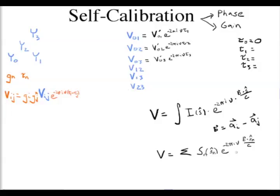In principle you can solve for all of these phase parameters, but how do you solve for them in practice? There are many methods. One is a simple fitting algorithm — such as a steepest descent towards the least-squares minimum — that explores the parameter space. Another option is to apply a logarithm to the system of equations to convert it into a linear system, which you can then solve with simple linear algebra.